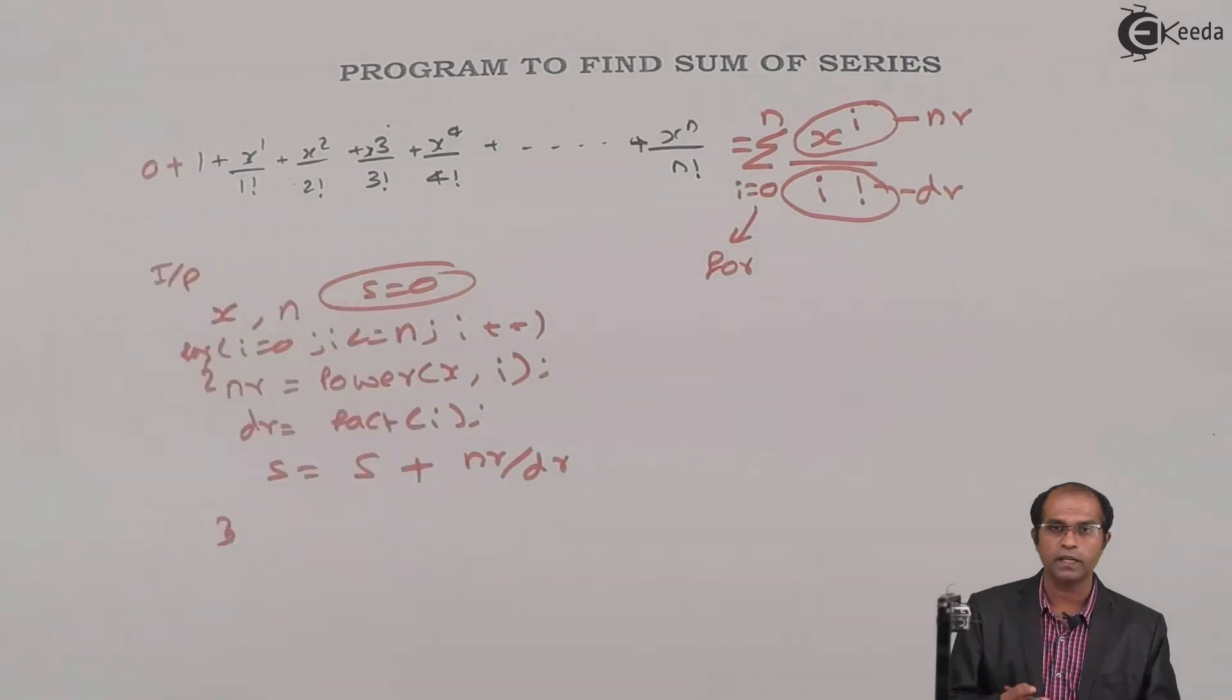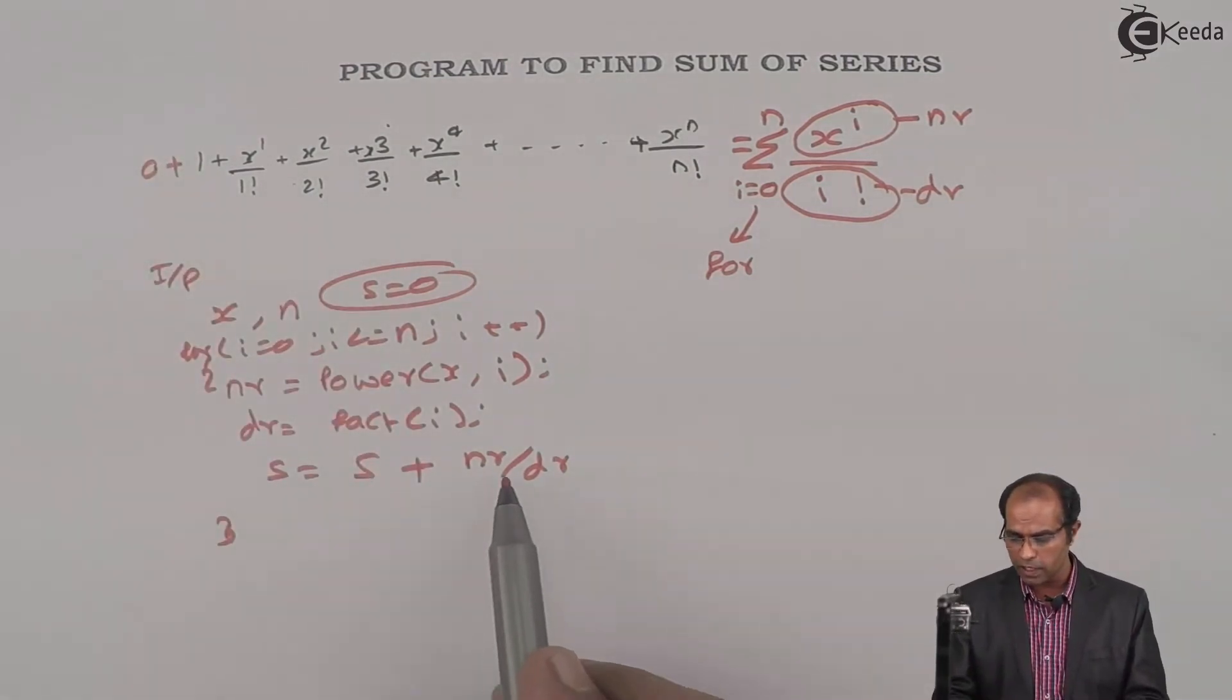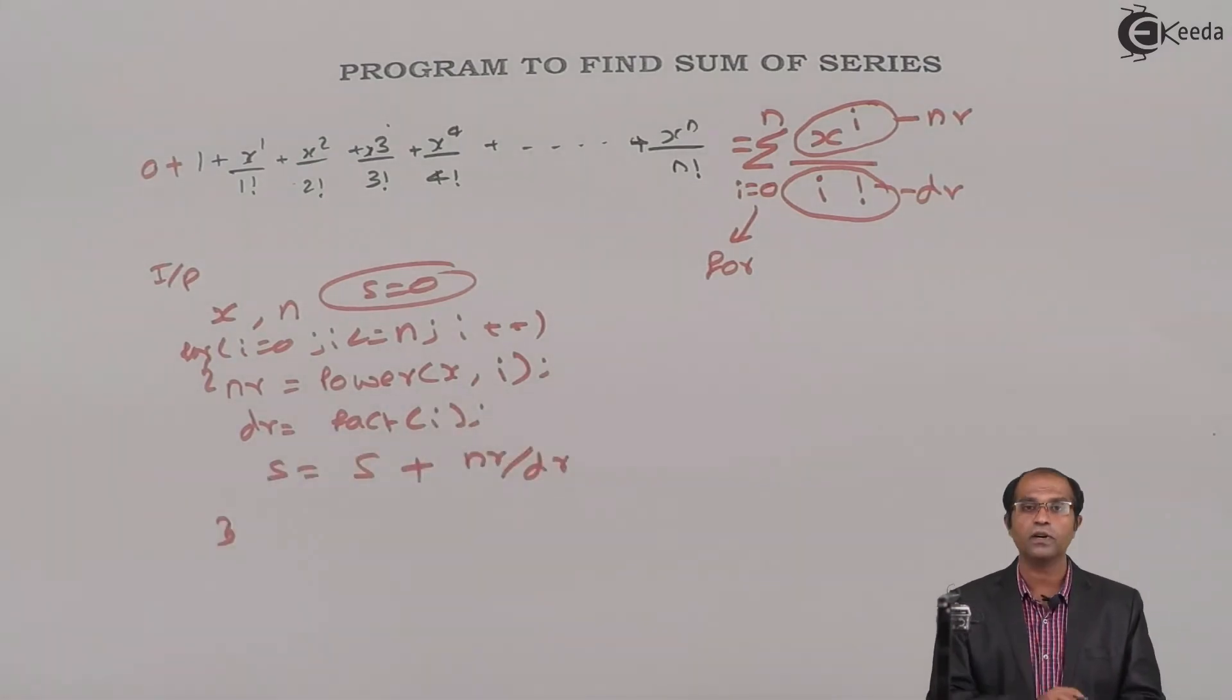This 0, if it is added with the first part, it doesn't make a difference. So 0 + nr/dr—regularly it has to be done for different values. Once it is done, then I can go for writing this particular function.